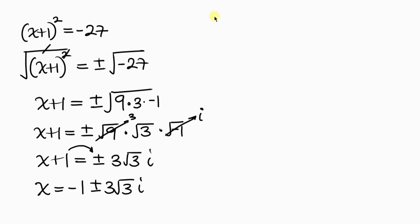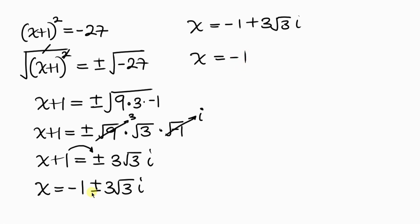This gives two complex solutions: x equals negative 1 plus 3 root 3 i, and x equals negative 1 minus 3 root 3 i. So from Case 1, we have one real solution x equals 8, and two complex solutions.